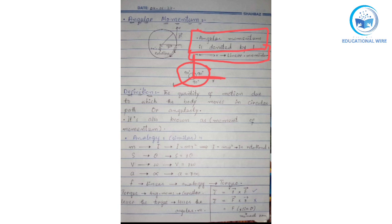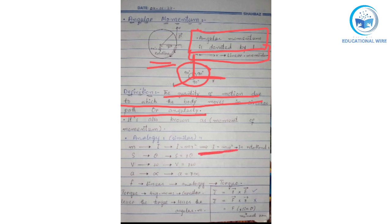Moving towards the definition: the quantity of motion due to which the body moves in a circular path or angularly — as I made the diagram with angular momentum, linear momentum, position vector, and axis of rotation — the quantity of motion from which the body moves in a circular path or angularly is called angular momentum.